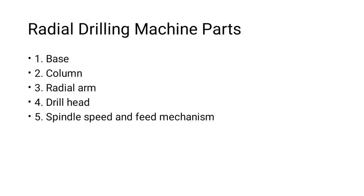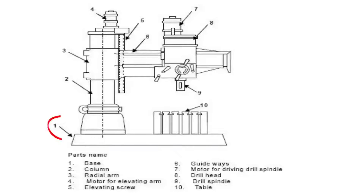We have already discussed the diagram of the radial drilling machine in the previous topic. Now let's start with what are the parts and components of the radial drilling machine. The first component is the base. These are some of the important components which we have to mark in the diagram also. So base — number one mark here — this is your base.